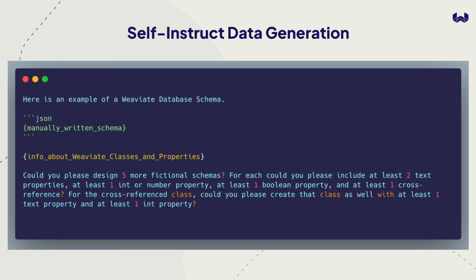We prompted: 'Could you please design five more fictional schemas? For each, include at least two text properties, at least one int/number property, at least one Boolean property, and at least one cross-reference — and please create that cross-reference class with at least one text and one int property.' This lets us generate synthetic cross-reference classes — for example, searching through books, getting the author, and doing a symbolic query like the average number of books they've written.